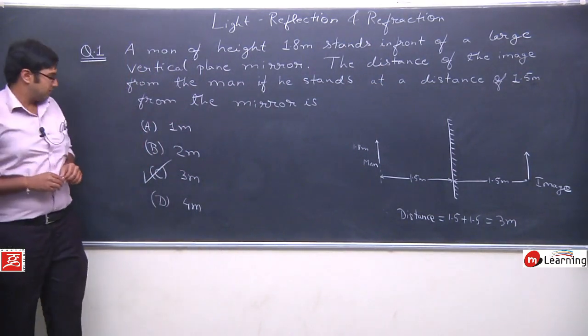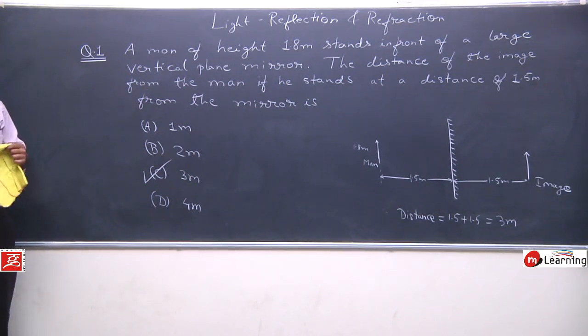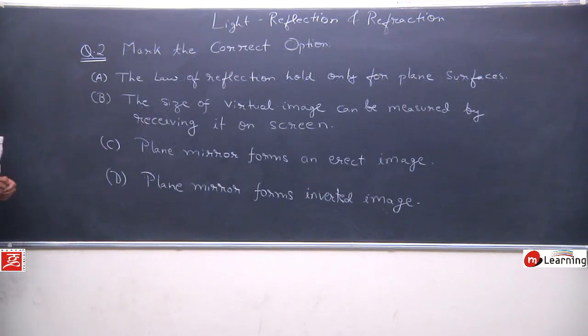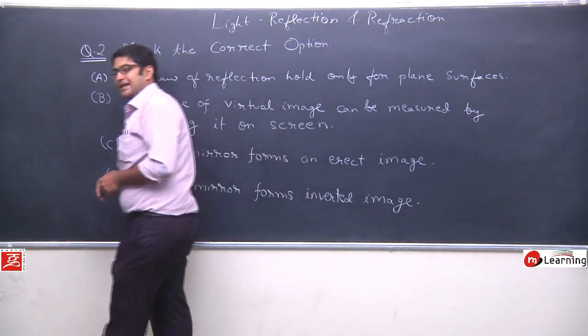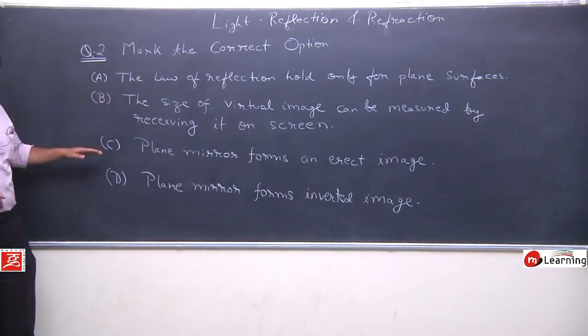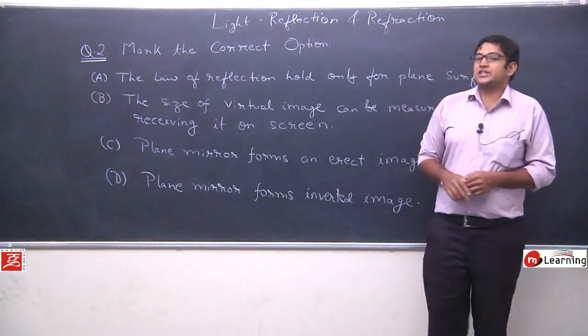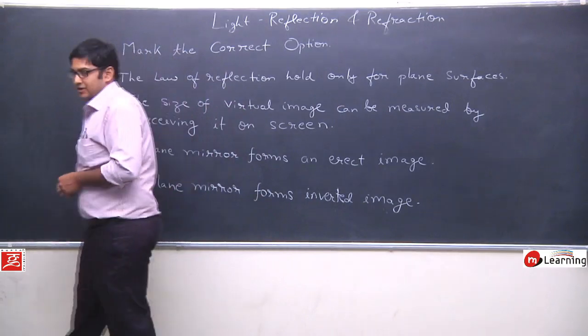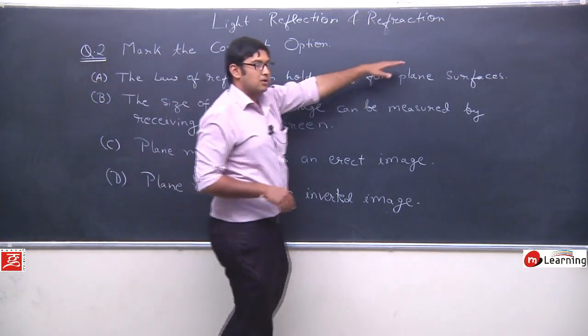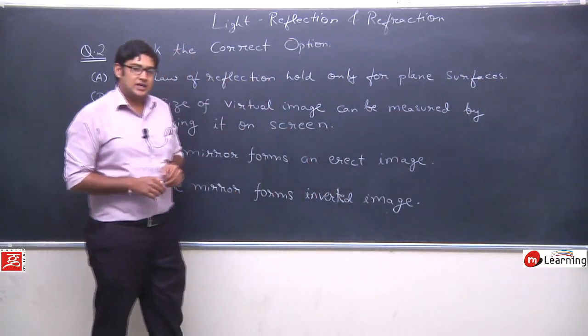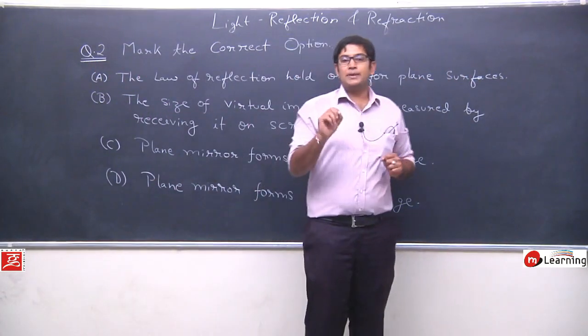Now, you can note this. Then, we will discuss the second question. Question is, mark the correct option. Means, you are given 4 options. Out of these 4, you have to mark the correct option. For example, the first is option A. Option A says, the law of reflection hold only for plane surfaces.